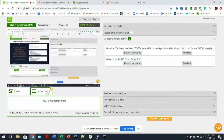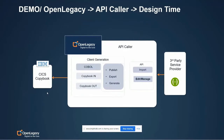Thank you very much — please confirm if you can see my screen right now. I'm going to focus and explain how the design time works, because this is where the magic happens. First, we initially need to have a third-party service provider that has a Swagger spec for the API we want to call from the mainframe. We'll bring this Swagger specification inside the API Caller, and we'll be able to do things like publish, export, generate, edit, and manage that Swagger spec. We can then generate three objects for each service: the COBOL code, the copybook in, and the copybook out.